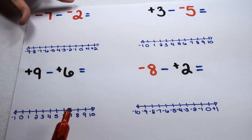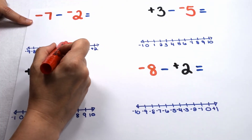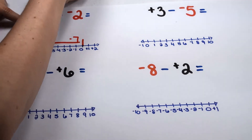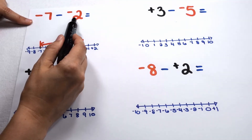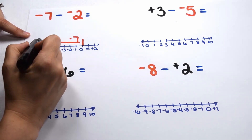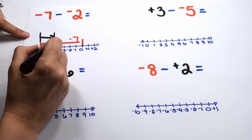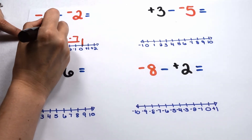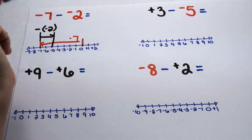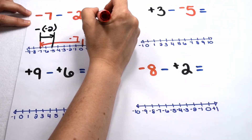We have negative 7 minus negative 2. We're going to start at 0, and negative 7 is going to send me 7 places to the left. We know we need to think of subtracting as telling me now to do the opposite. Since negative 2 would normally tell me to continue on to the left, I'm going to want to do the opposite of that and go back two places to the right. When I go back two places to the right, I land at negative 5. So negative 7 minus negative 2 lands me at negative 5.